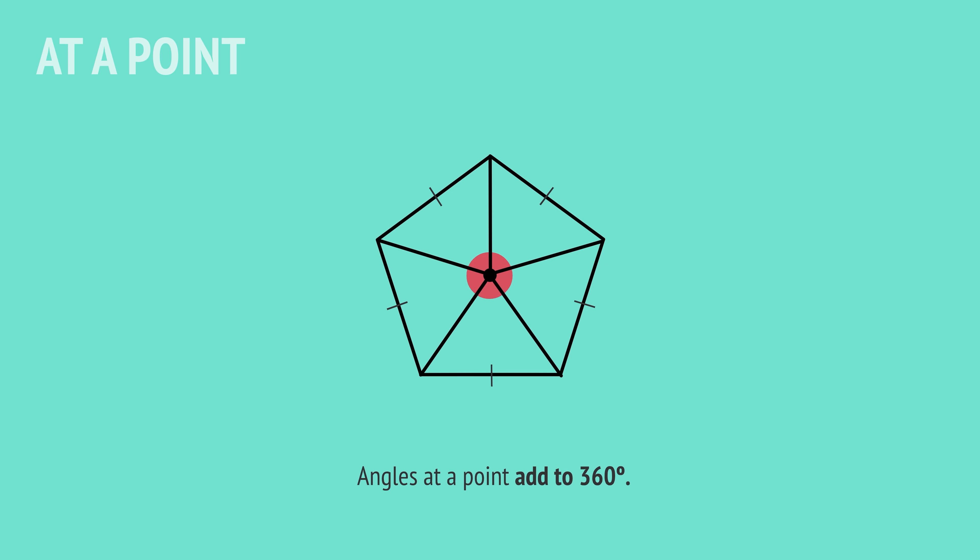The final relationship involves the angles formed at a point. A full turn is 360 degrees, so the angles at a point will always add to 360 degrees. And we can apply this relationship in many situations, any time we're interested in the angles from a point.